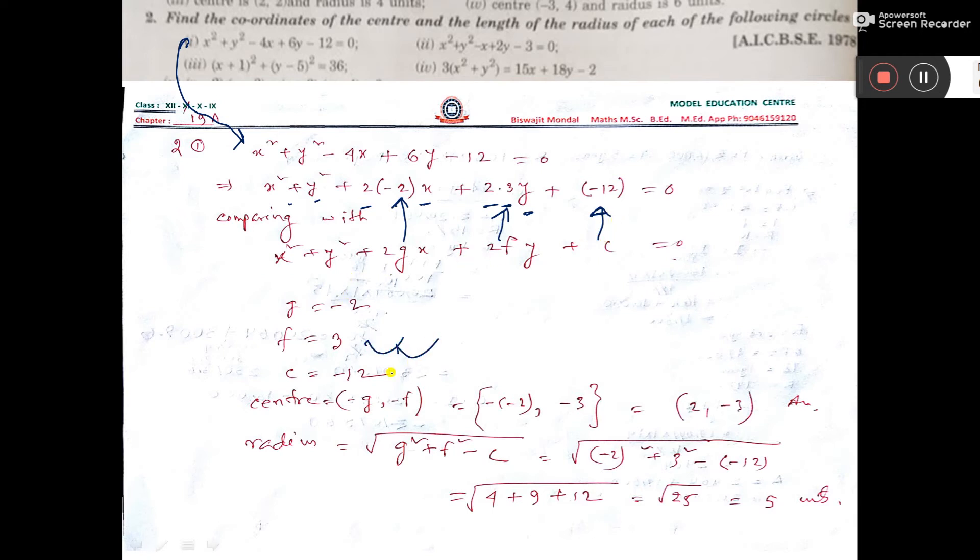Now here I have written that. Now center formula we know that minus g minus f. So minus of value of g you put and minus of value of f you put. Then it is coming 2 comma minus 3. This is the center.